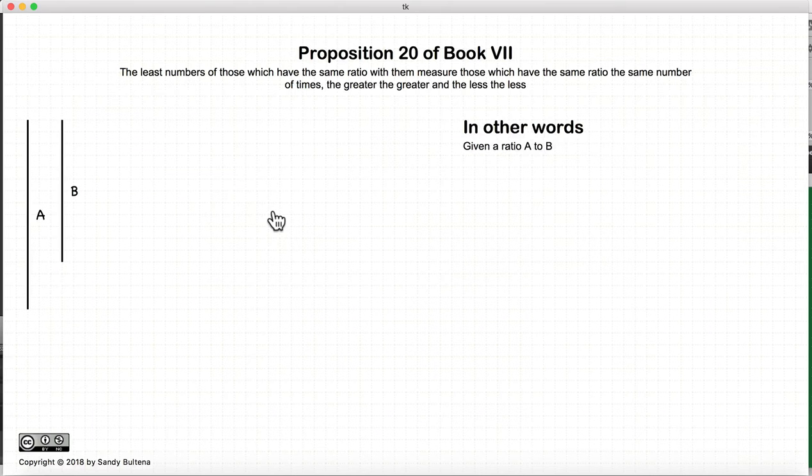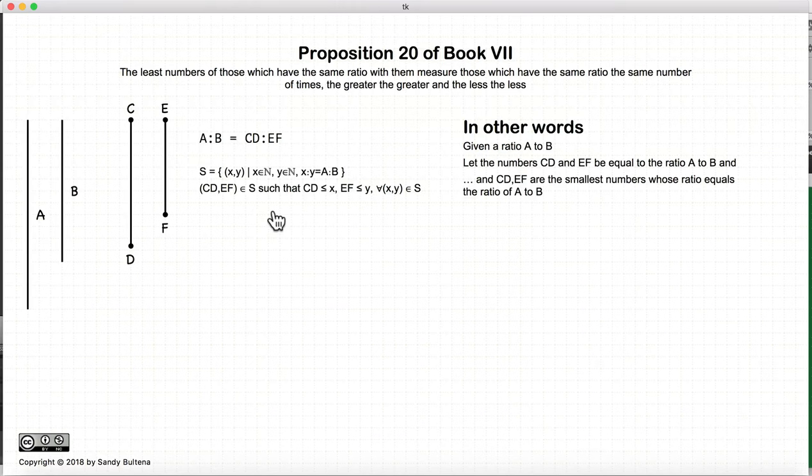So dealing with the proposition, basically we start with two numbers, A and B, and we find another two numbers, CD and EF, where CD and EF are the two smallest numbers of all the pairs of numbers that have the same ratio as A to B. So for the mathematicians out there, I wrote it here. I'm just going to read this once. I reuse this statement in many of the other propositions that are coming up, but this is the one and only time I'm going to go through this.